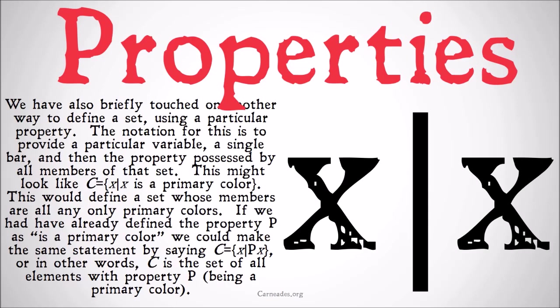We briefly touched on another way to define a set using a particular property. Here we're going to explicitly explain what's going on. The notation for this is to provide a particular variable, a single bar, and then the property possessed by all members of that set. This might look like C equals, in curly brackets, x | x is a primary color. This would define a set whose members are all and only primary colors. The x there stands in for each of the members of the set — if it's true that x is a primary color, then x is a member of that set. If we've already defined the property P as 'is a primary color,' we could make the same statement by saying C equals {x | Px}, meaning C is the set of all elements with the property P being a primary color.